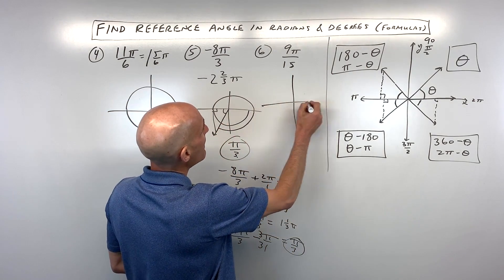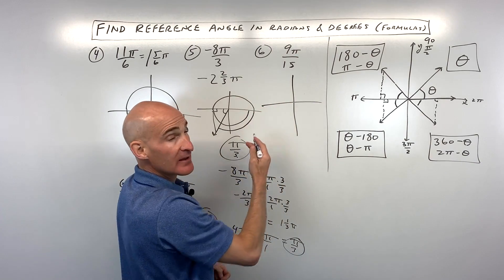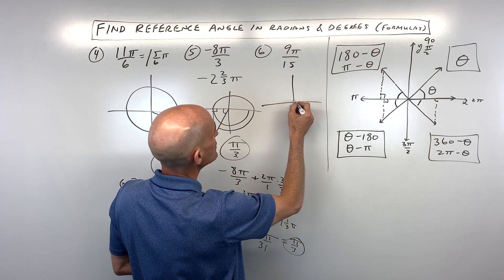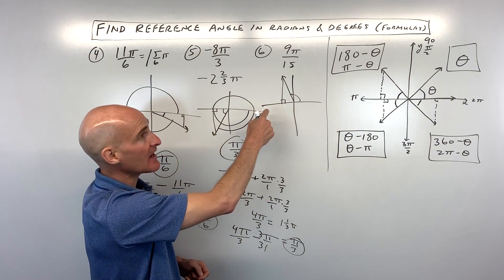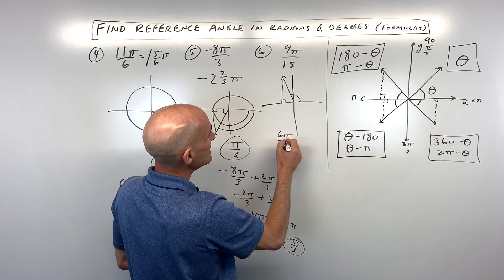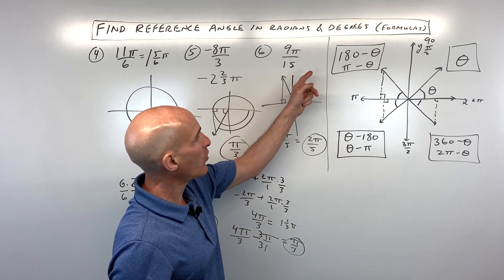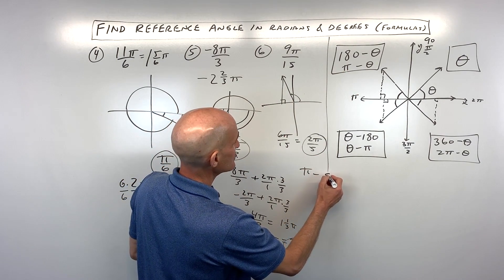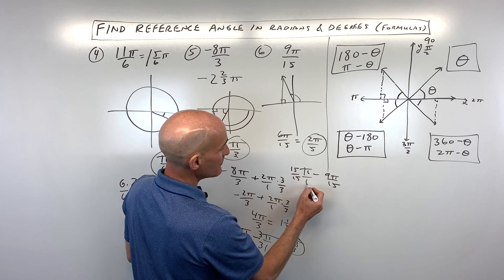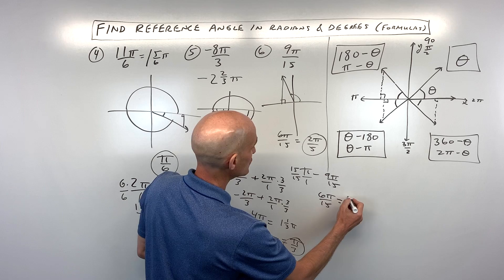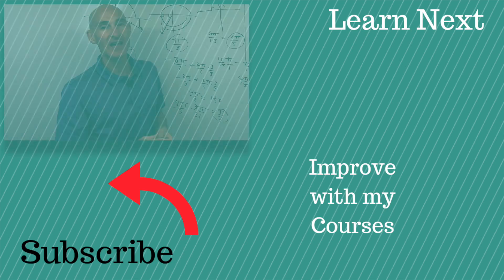Number six: 9π/15. Nine-fifteenths is a little more than half, so this angle is a little more than halfway to π — somewhere in the second quadrant. How much more does it take to reach π? Another 6π/15, which reduces to 2π/5. So the reference angle is 2π/5. Using the formula for the second quadrant: π minus 9π/15 equals 15π/15 minus 9π/15, which is 6π/15, reducing to 2π/5. Either draw a sketch or use the formulas — you get the same result.